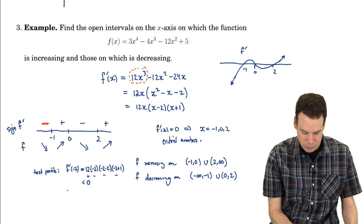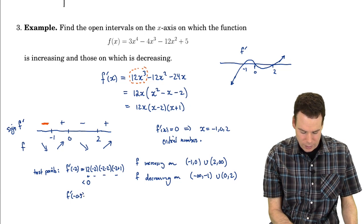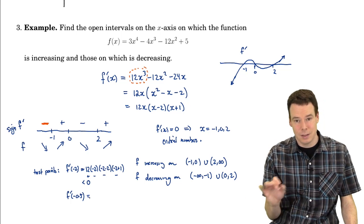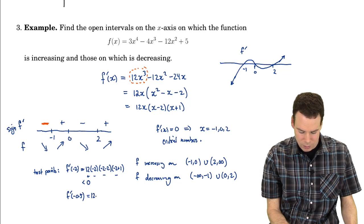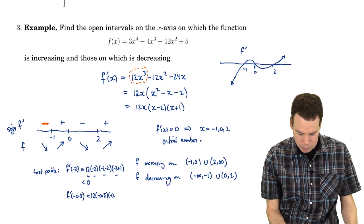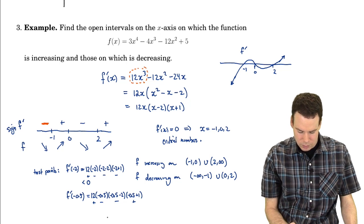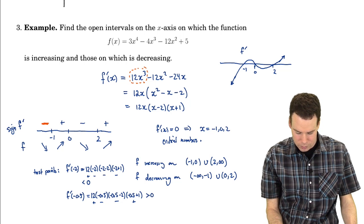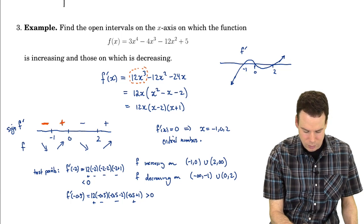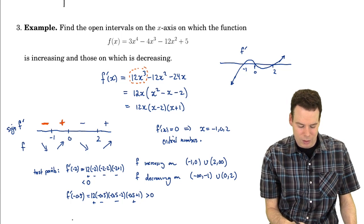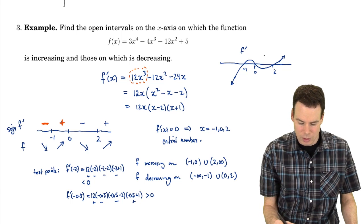For the interval from -1 to 0, I pick a test point of x = -0.5. Plugging into the factored derivative: 12(-0.5)(-0.5 - 2)(-0.5 + 1) gives positive times negative times negative times positive — the product of two negatives is positive — so the derivative is positive there.